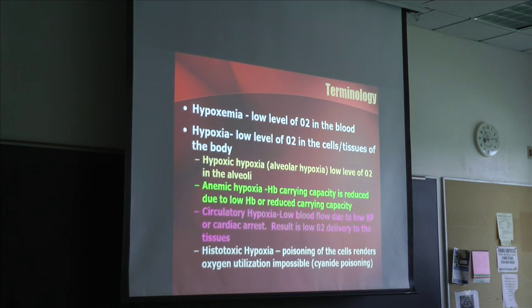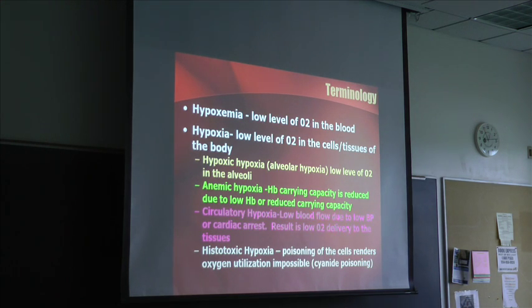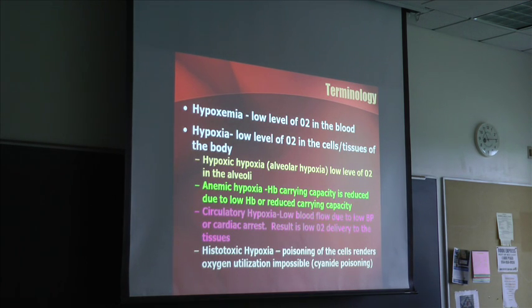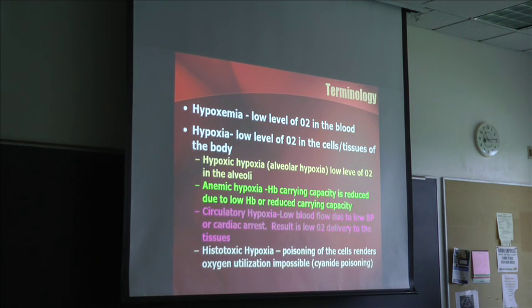What if your body's not making enough red blood cells due to low iron? Would that classify as anemic hypoxia? Yes — less hemoglobin to carry the oxygen. It goes along with anemia, which everybody's heard of: a low amount of blood cells.